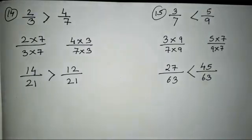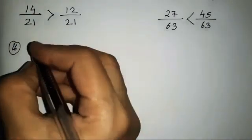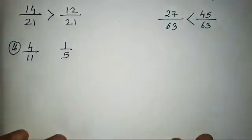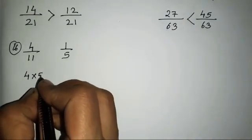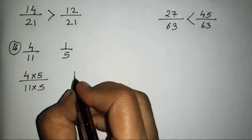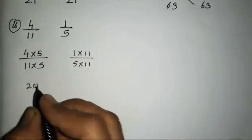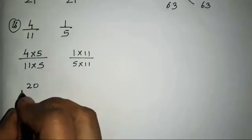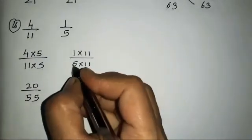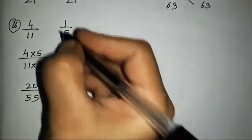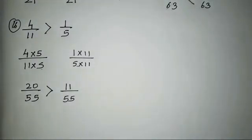Now the last sum of this exercise: 4 upon 11 and 1 upon 5. Again cross multiply each other — 4 fives are 20 over 11 fives 55, and 1 eleven is 11 over 5 elevens 55. Which side is greater? 20 is greater, so 4/11 is greater. Put this sign here and the same sign above. I hope this exercise is clear to everyone. If you find anything difficult, please let me know in the comment section. See you in the next video, take care, bye.